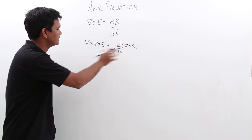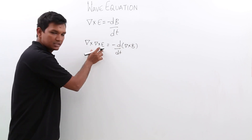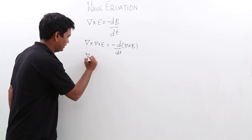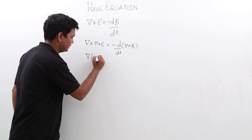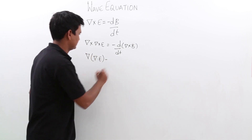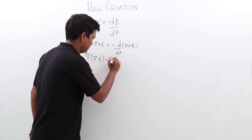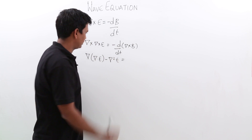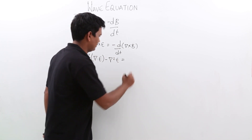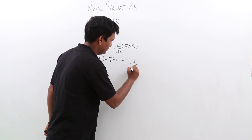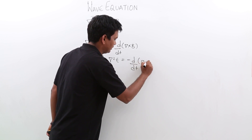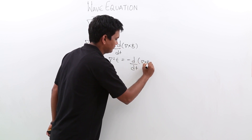So I have to take both sides. The result will be: del of (del dot E) minus del square E is equal to minus d by dt of del cross B.